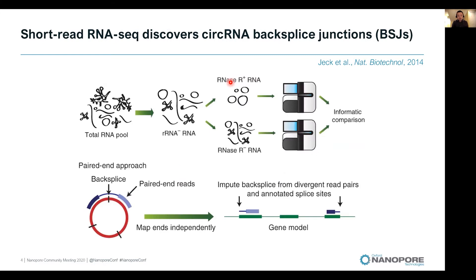In the last decade, short-read Illumina RNA sequencing has been the primary approach for the discovery of circular RNAs. The general strategy is that we start with the total RNA pool, deplete ribosomal RNAs and also linear RNAs, and the remaining circular RNA-enriched pool is then subject to Illumina paired-end sequencing. We can map those paired-end reads back to the genome and transcriptome to identify and quantify circular RNA back-splice junctions that represent those circular RNA species.